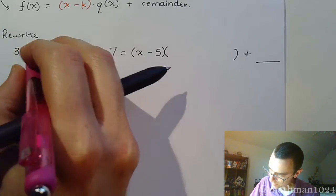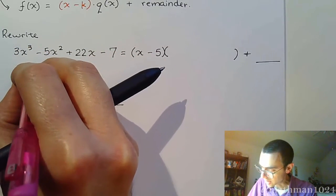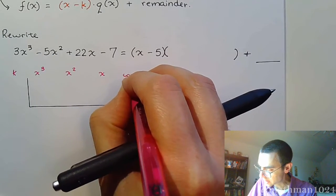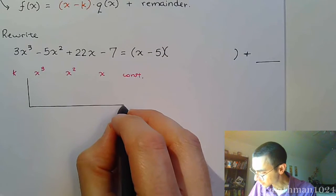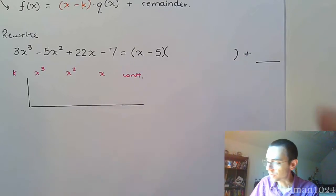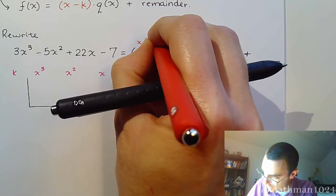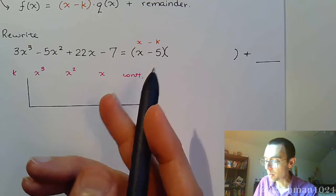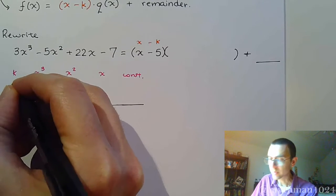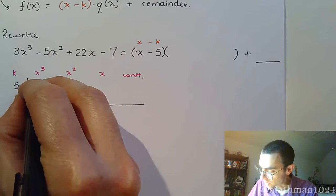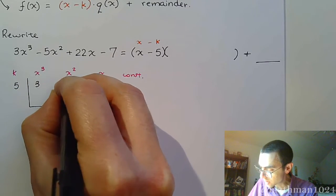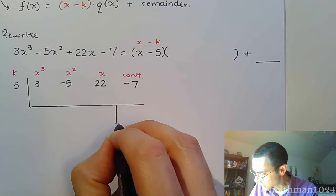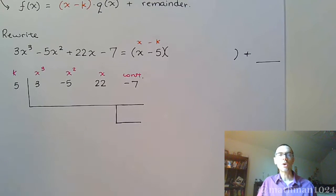With synthetic division, I'm going to have my k value out here. This goes all the way up to x to the third, so we'll have a column for x cubed, x squared, x, and then the constant. This is in the form x minus k, and we talked about how you do the opposite of what you see. I see negative 5, so I write positive 5. The coefficients are: 3 for x cubed, negative 5 for x squared, 22 for x, and negative 7. There's a little box at the end where our remainder goes.